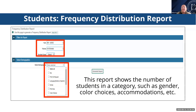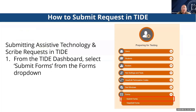Also under the student menu is the frequency distribution report, available at the LEA or school level, which displays the number of students in specific categories in a grid or graph. For students who require assistive technology or scribe, you make the request to USBE through TIDE using the forms menu in the Preparing for Testing section. This alerts USBE and requires approval. On the TIDE dashboard, an LEA or school-level user clicks on Forms, then Submit Forms, and selects the type of form to submit.